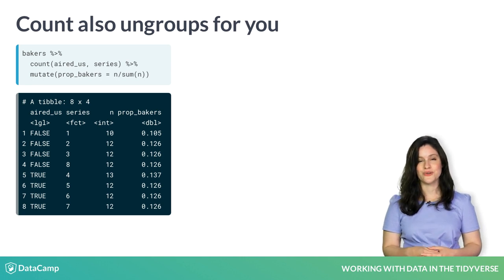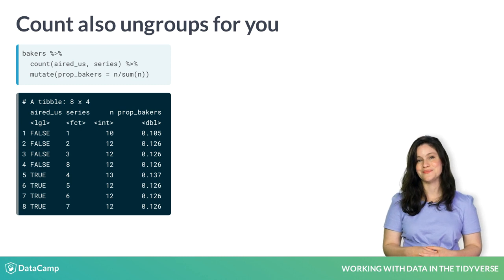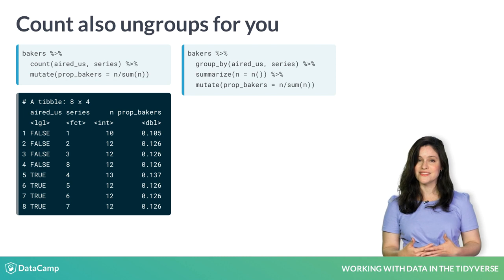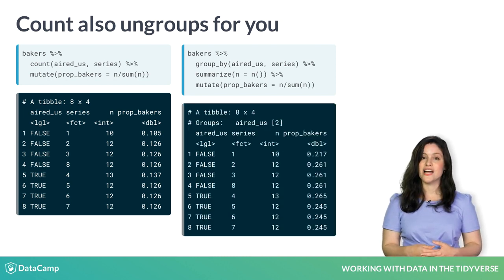There are 95 bakers total, and 10.5% appeared in series 1. But if we instead used group_by then summarize, the result might be surprising. This is because our tibble is still grouped, which you can see on the right.